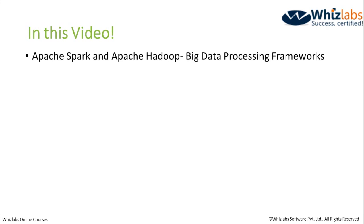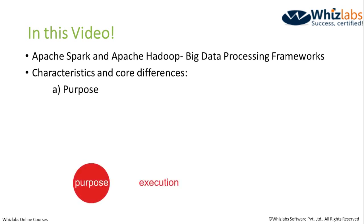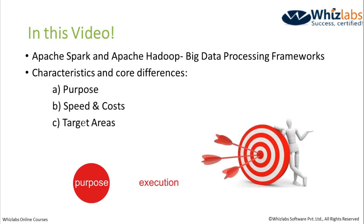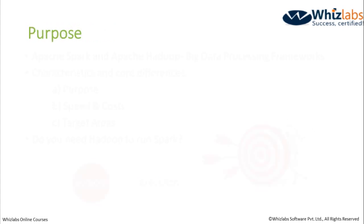Apache Hadoop and Apache Spark are two technologies that are both big data processing frameworks. However, they don't really share the same characteristics and hence are used to target different application domains. Let's try to identify the core features between them by identifying the purpose, their speeds and costs, and lastly the target area that these technologies are used to develop applications on. Thereafter, we will try to answer the most important question: do you need Apache Hadoop to run Spark? So let's move on to the first characteristic, that is, purpose.